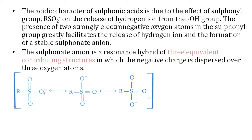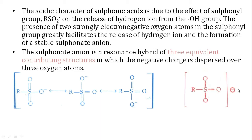In the sulfonate ion, there are three oxygen atoms, and the negative charge moves among them in resonance — sometimes on one oxygen, sometimes on another, giving three resonance structures. The resonance hybrid shows partial negative charge distributed over all three oxygen atoms, making it very stable.